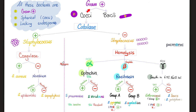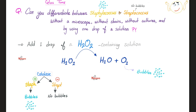Can we differentiate between Staph and Strep by using one drop of a solution? Yes, just add one drop of hydrogen peroxide. If the bacteria has catalase — i.e., Staph — it will convert your H2O2 into water and oxygen. Oxygen is a gas that will give you bubbles. So if you see bubbles, it is catalase positive, i.e., Staph. No bubbles — it is Strep.